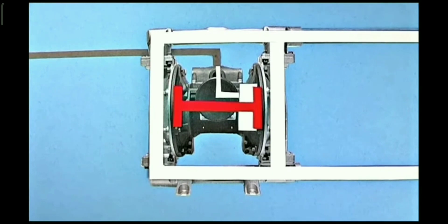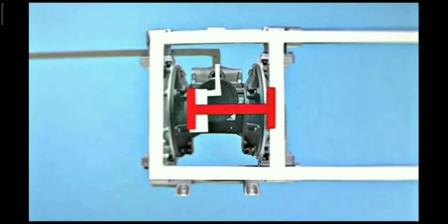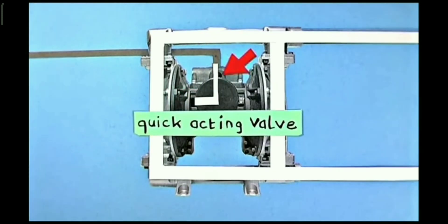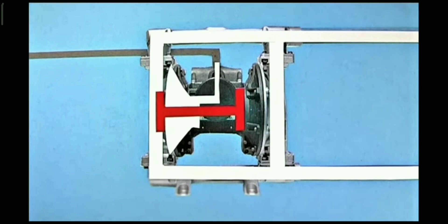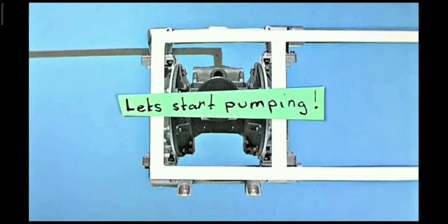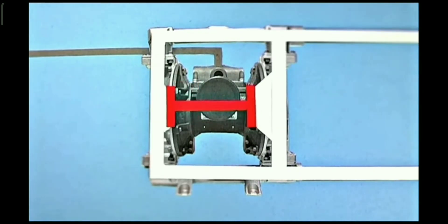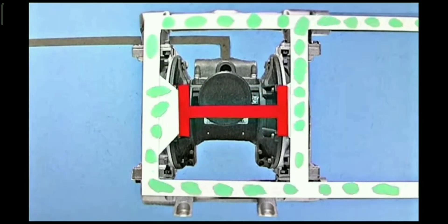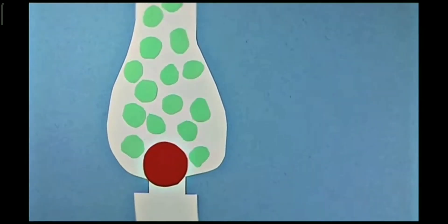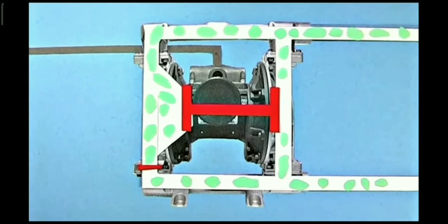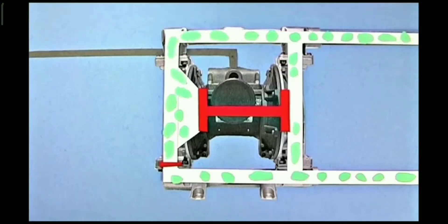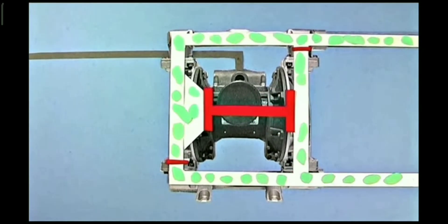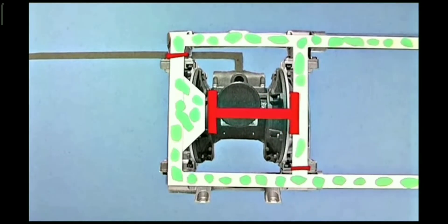The pump's operation relies on the movement of a flexible diaphragm at the middle of the pump. It releases compressed gas or air which drives the momentum of the flexible diaphragm. The diaphragm then undergoes a reciprocating back-and-forth motion. As the diaphragm moves, it creates changes in volume within the pump chamber, causing fluid to be drawn in and expelled.